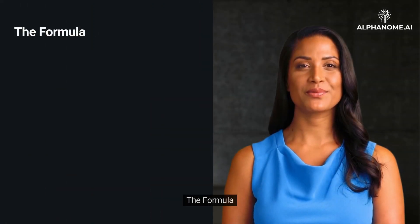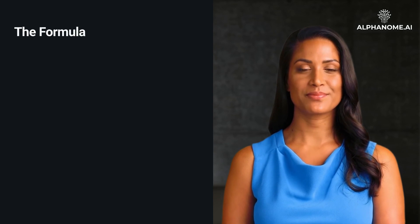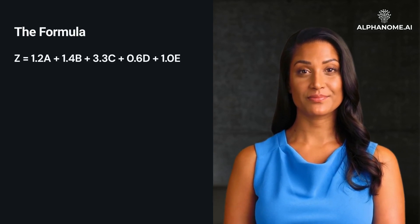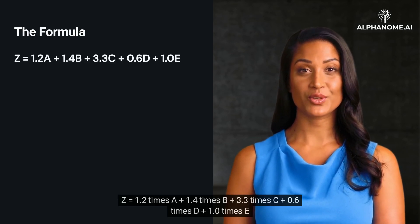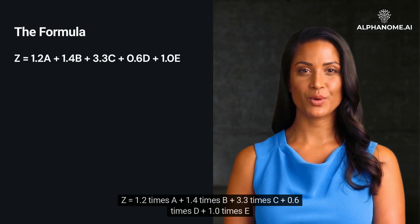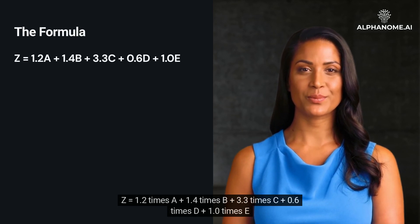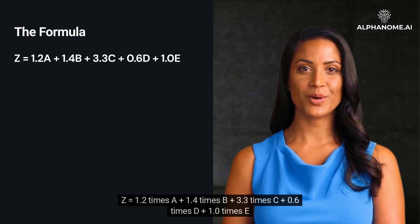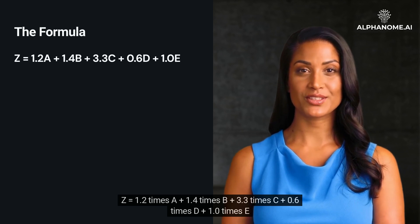The Formula. The Z-Score is calculated as: Z = 1.2×A + 1.4×B + 3.3×C + 0.6×D + 1.0×E.